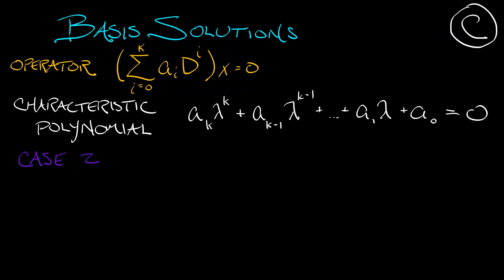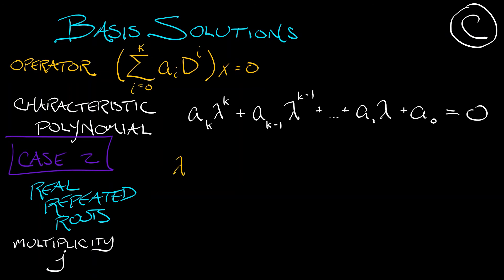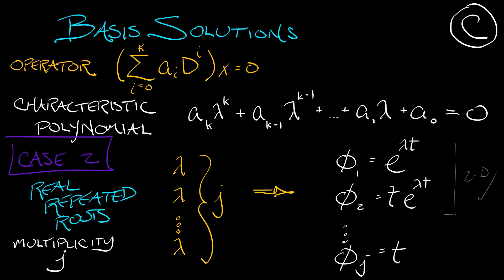Now where it gets interesting is if you have real repeated roots. Let's say that lambda is a root of this polynomial, but with multiplicity j. Then this is going to contribute j different basis solutions. The first one being e to the lambda t. The second one being t e to the lambda t, just like it was in 2D. But now we keep going with higher powers of t out front. All the way up until the last one, phi sub j, which is going to be t to the j minus 1 e to the lambda t.